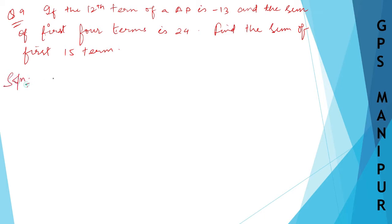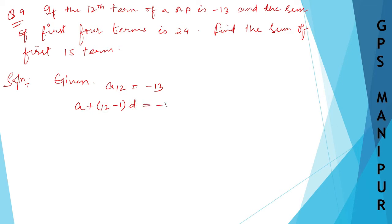Given: the 12th term of an AP is minus 13, so A12 is equal to minus 13. I can write A12 as A plus N minus 1 times D. So N minus 1 is 12 minus 1 equals 11, giving us A plus 11D is equal to minus 13.